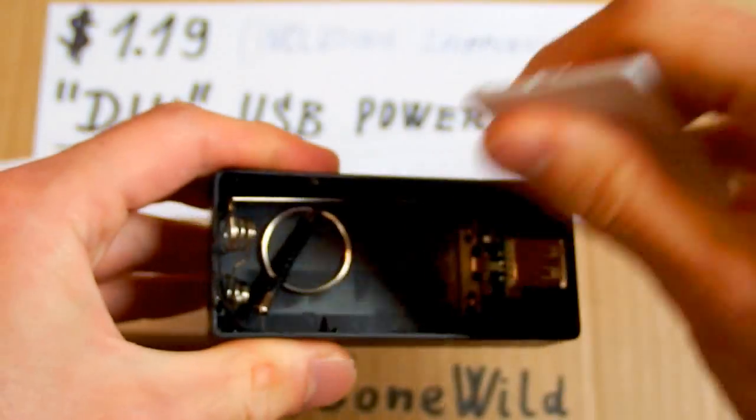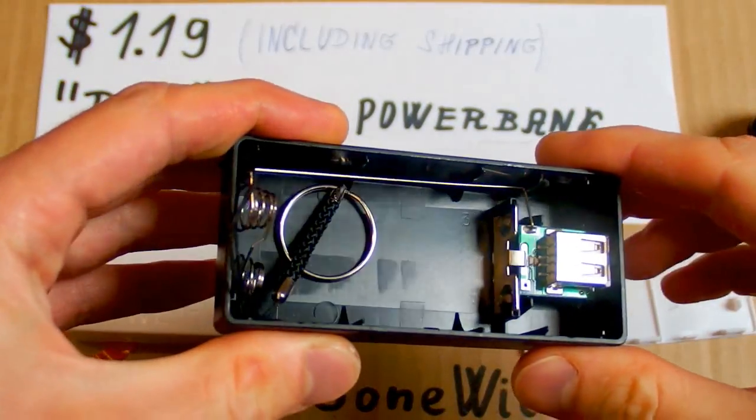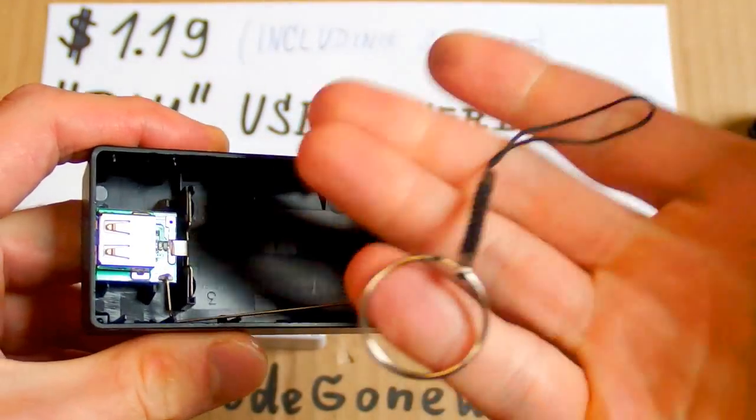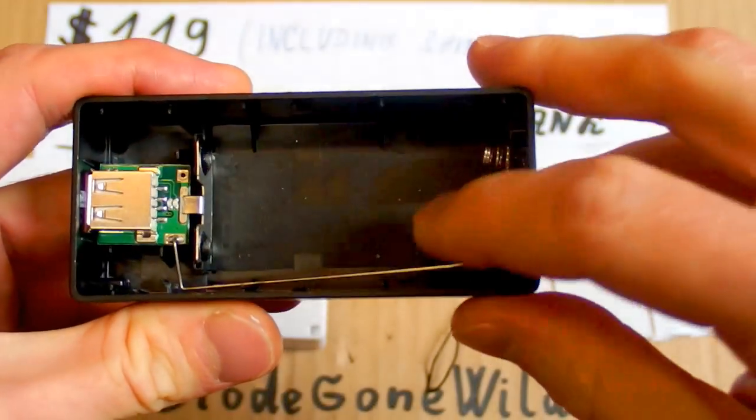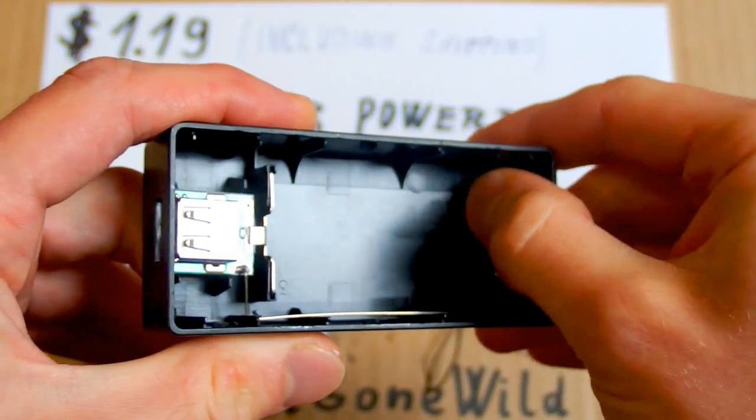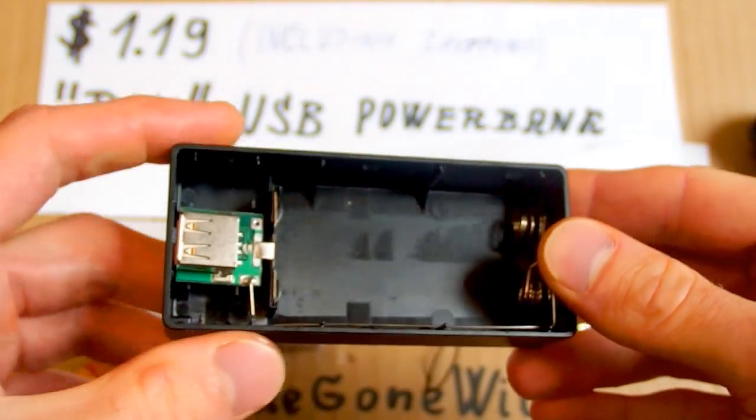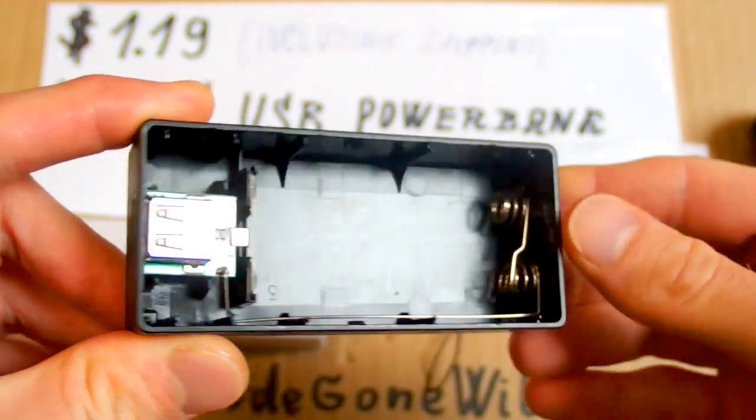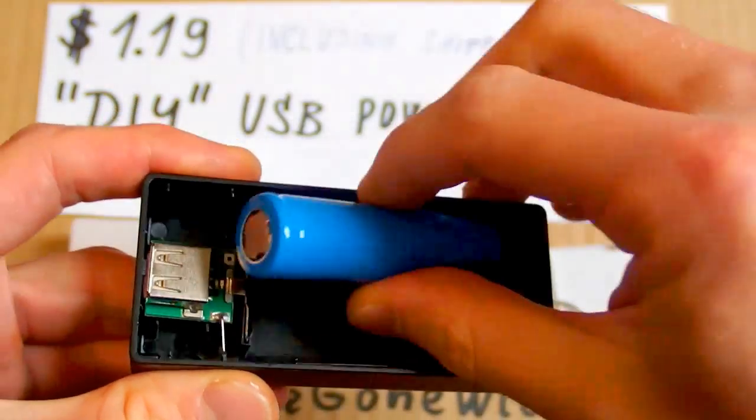And this is because it comes with no cells. There is a keychain for it and space for two 18650 lithium-ion batteries. But there are none. You have to put your own cells into it.